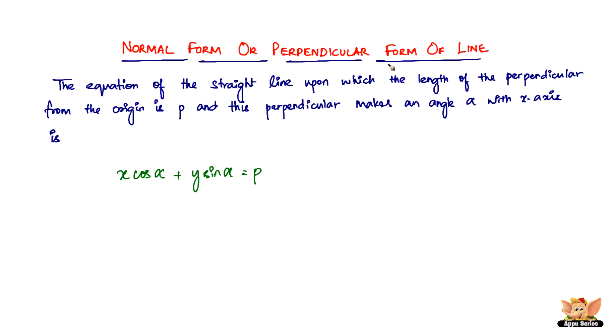What is the normal form or perpendicular form of a line? The equation of the straight line upon which the length of the perpendicular from the origin is P and this perpendicular makes an angle alpha with x-axis is given by x cos α plus y sin α equals P.